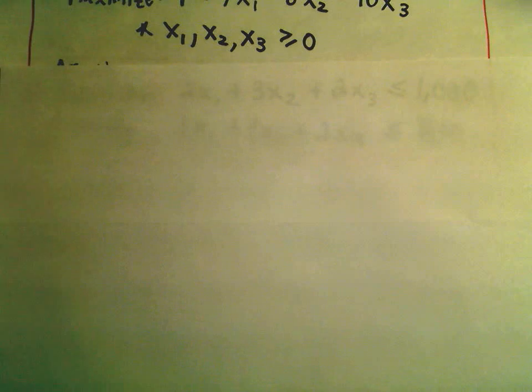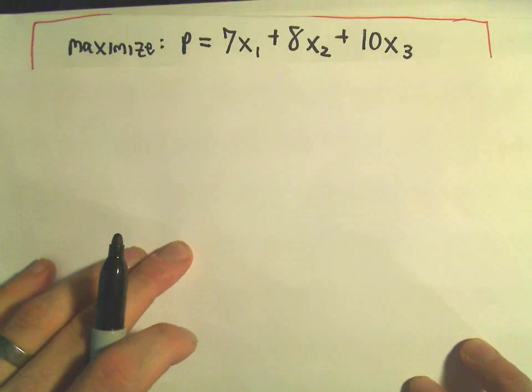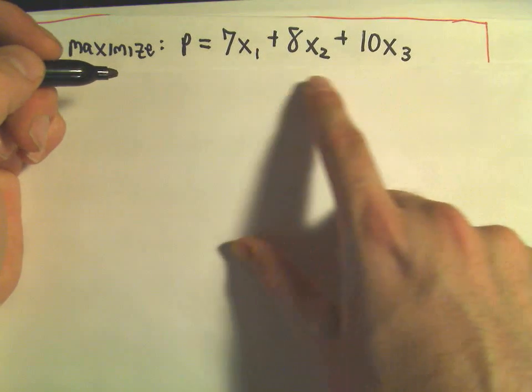Okay, so a couple things I'm going to do here. The first thing I'm going to do is take my function I'm trying to maximize and I'm going to rewrite that so that the right side equals 0.